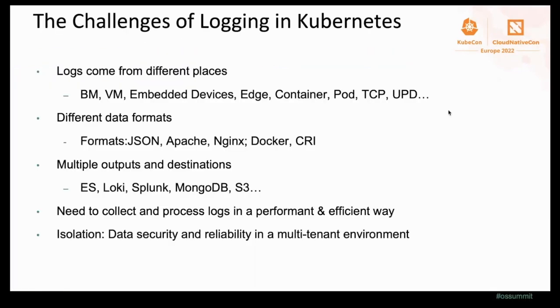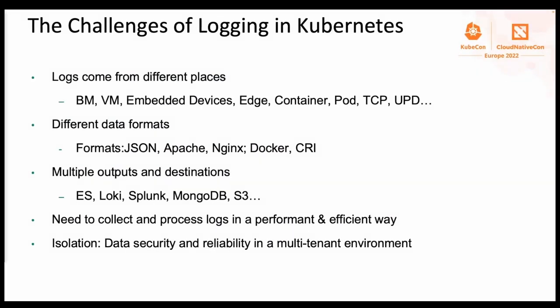In the real enterprise environment, logs actually come from different places such as bare-metal servers, virtual machines, embedded devices, edge, container, port, TCP, or UDP. All of that data is in different formats such as JSON logs, Apache logs, Nginx logs, or container logs. In some typical cases, you might want to ship them to different destinations such as Elasticsearch, OpenSearch, Loki, Splunk, MongoDB, or S3. Considering data security and reliability in a multi-tenant environment, you have to isolate log data and make it only visible to a specific user or in a specific namespace.